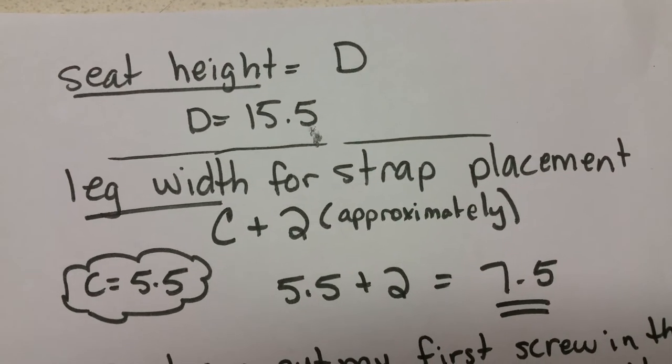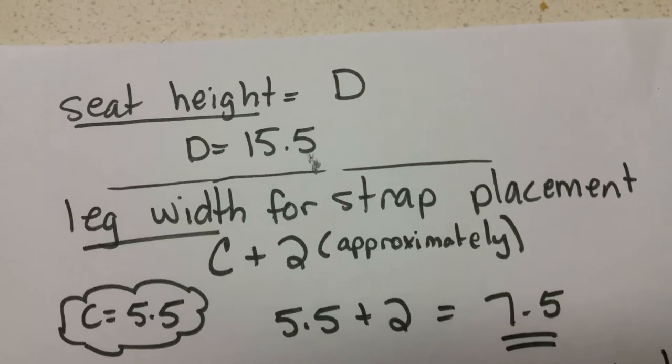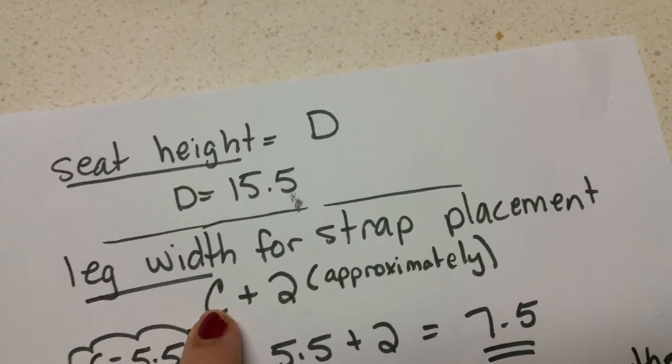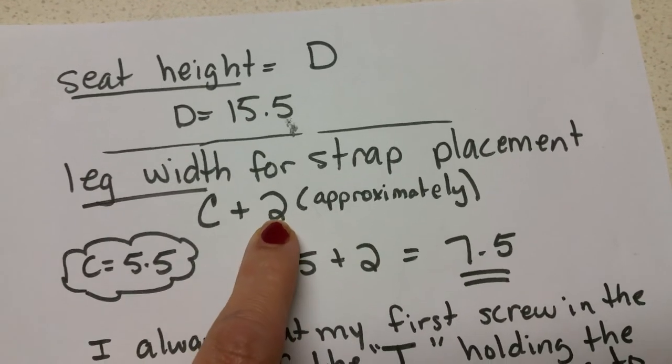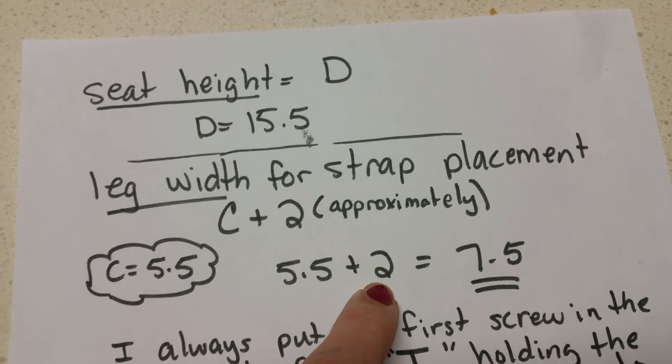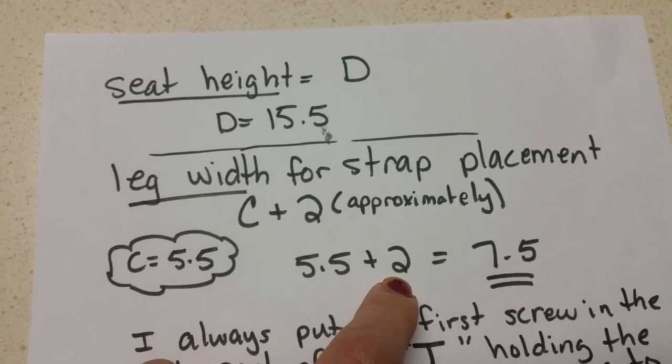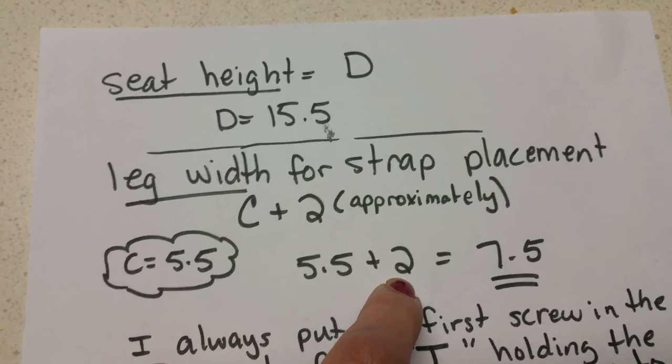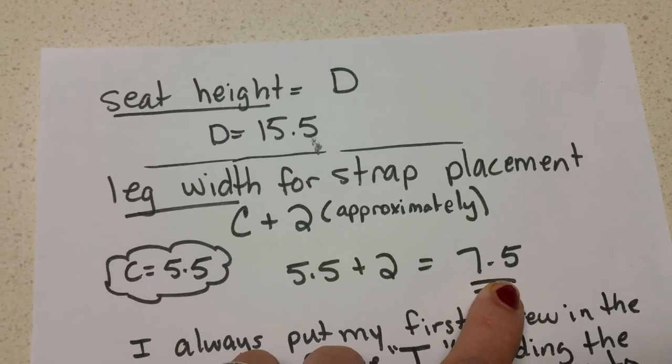To determine how wide to make the leg straps for the saddle we take the width of the thigh which was C, and it was five point five inches, and we add approximately two inches of room for the leg to move back and forth inside of and not constrict any blood flow or cause any discomfort there. So our leg width here is going to be seven and a half inches.